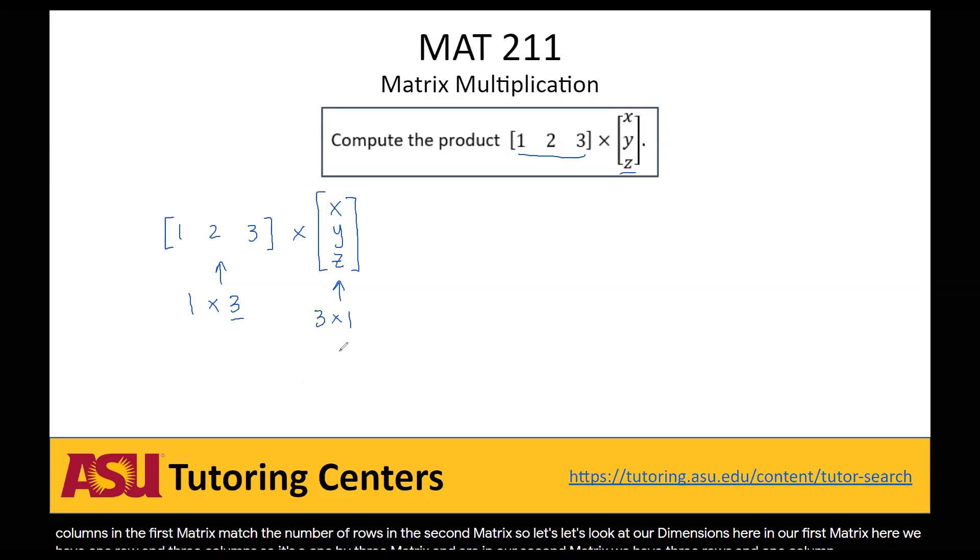So note that the columns of the first matrix match the rows of the second matrix, or the inner dimensions match. So we can definitely do this multiplication.